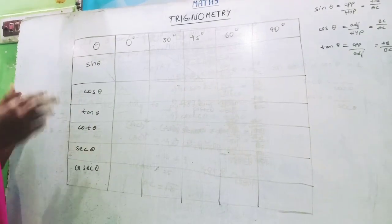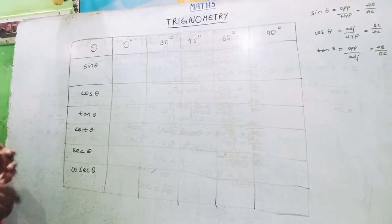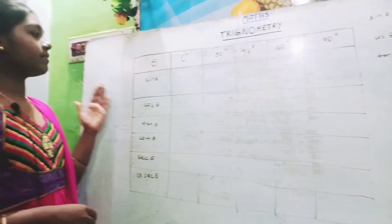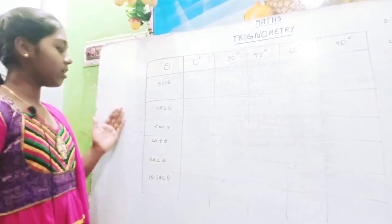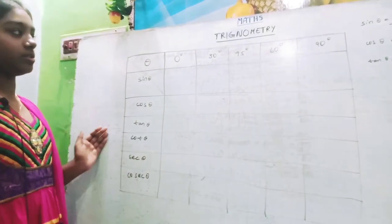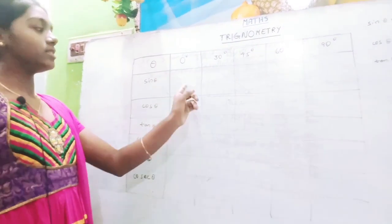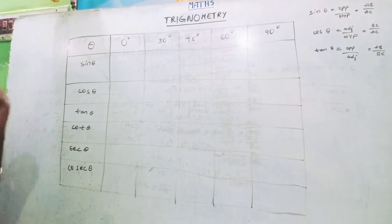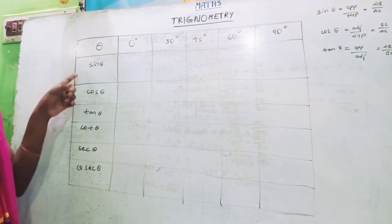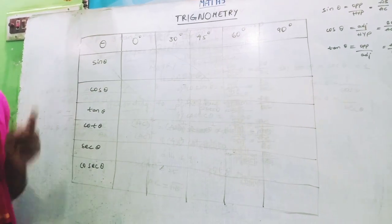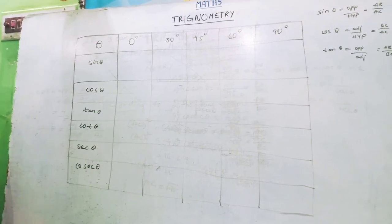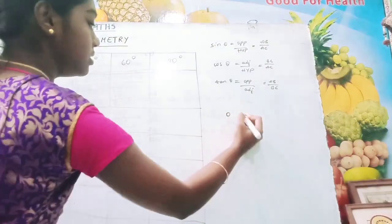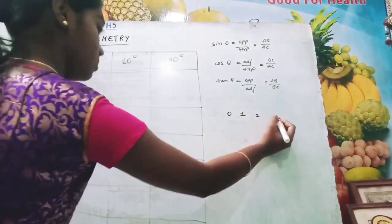Up to now, we have learned about trigonometric ratios and multiplicative inverses of the trigonometric ratios. Now we will see the trigonometric ratios in degree values: 0, 30, 45, 60 and 90 degrees. I will tell you a trick to find the value of sin theta in degrees. To find the sin theta values, write 0, 1, 2, 3 and 4.